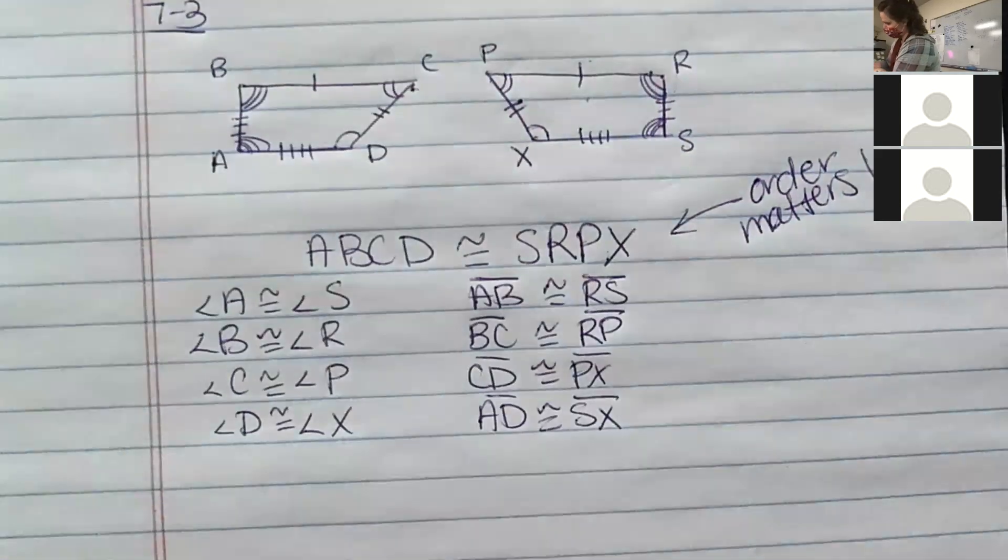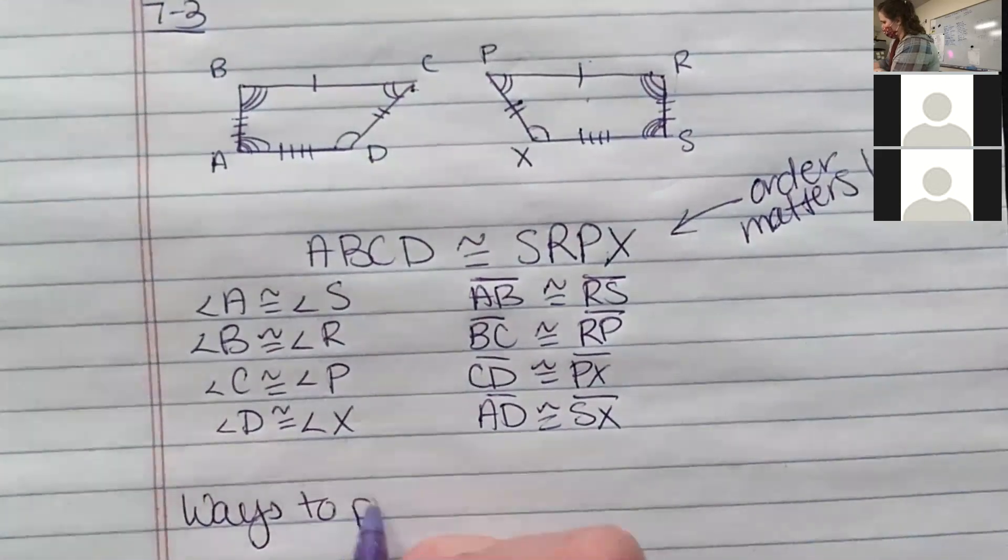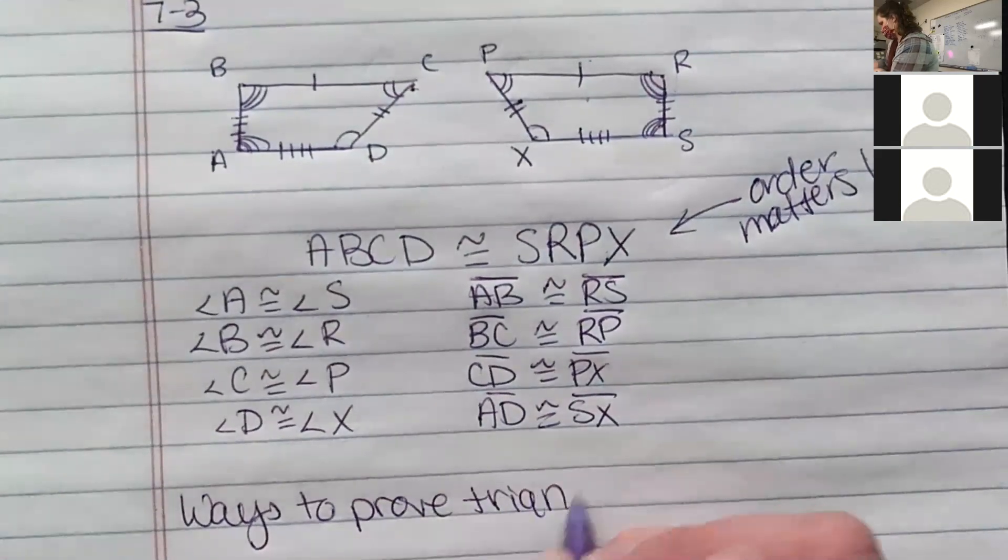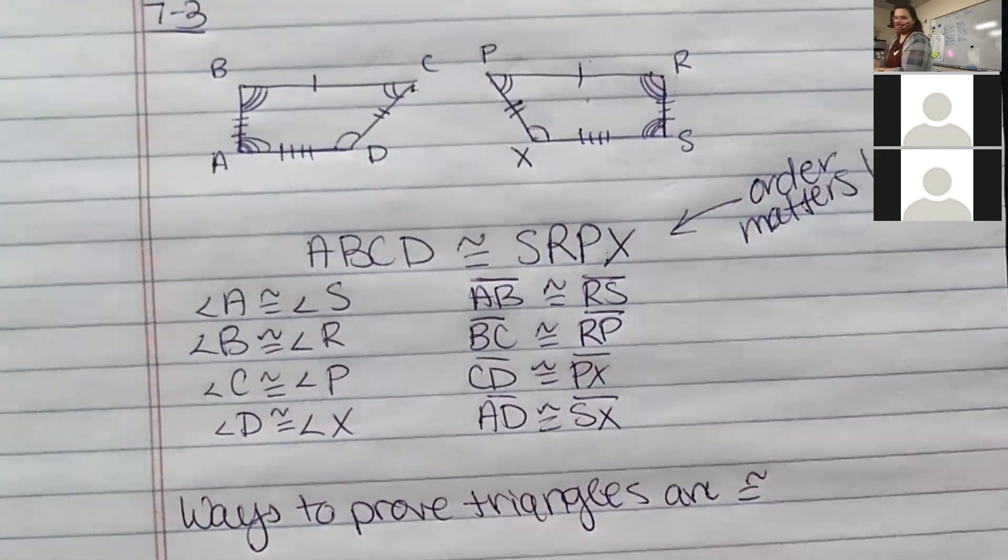Now we're going to talk about just triangles, ways to prove triangles are congruent. I'm going to use the congruent sign, the squiggle equal sign.